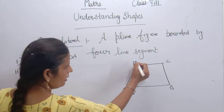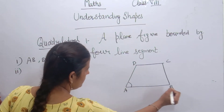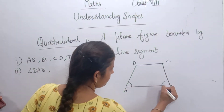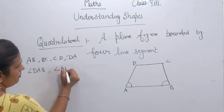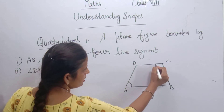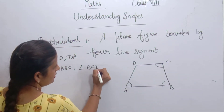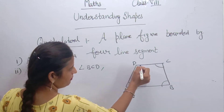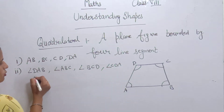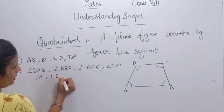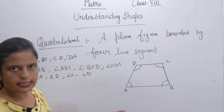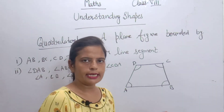The four angles are: angle DAB, angle ABC, angle BCD, and angle CDA. Or we can simply call them angle A, B, C and D. These are four angles. There are four sides and four angles. Now, the vertices are points A, B, C and D — these are 4 vertices. And when we join opposite vertices, we get diagonals. There are 2 diagonals.